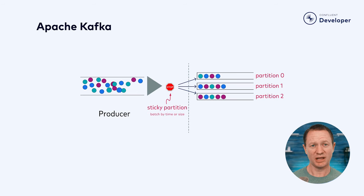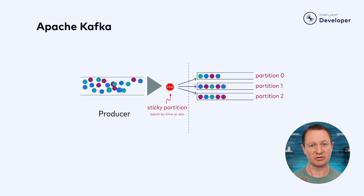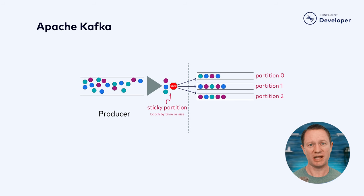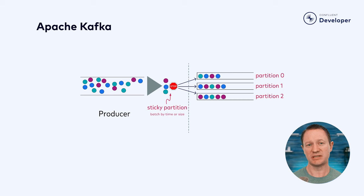If your key is null, a sticky partition is used. This essentially means that messages are batched either by a certain size or a period of time, and then sent to the same partition, at which point a new batch will be started and sent to a different partition. This helps drive latency down while still spreading the messages out over all of the partitions.